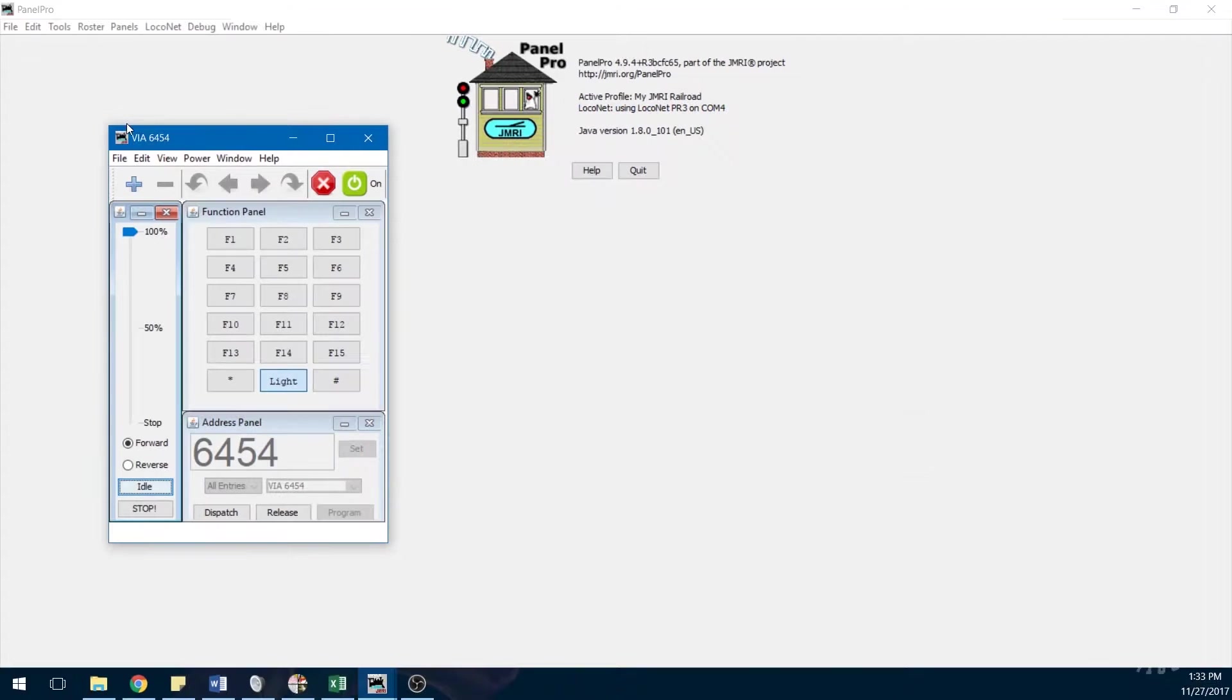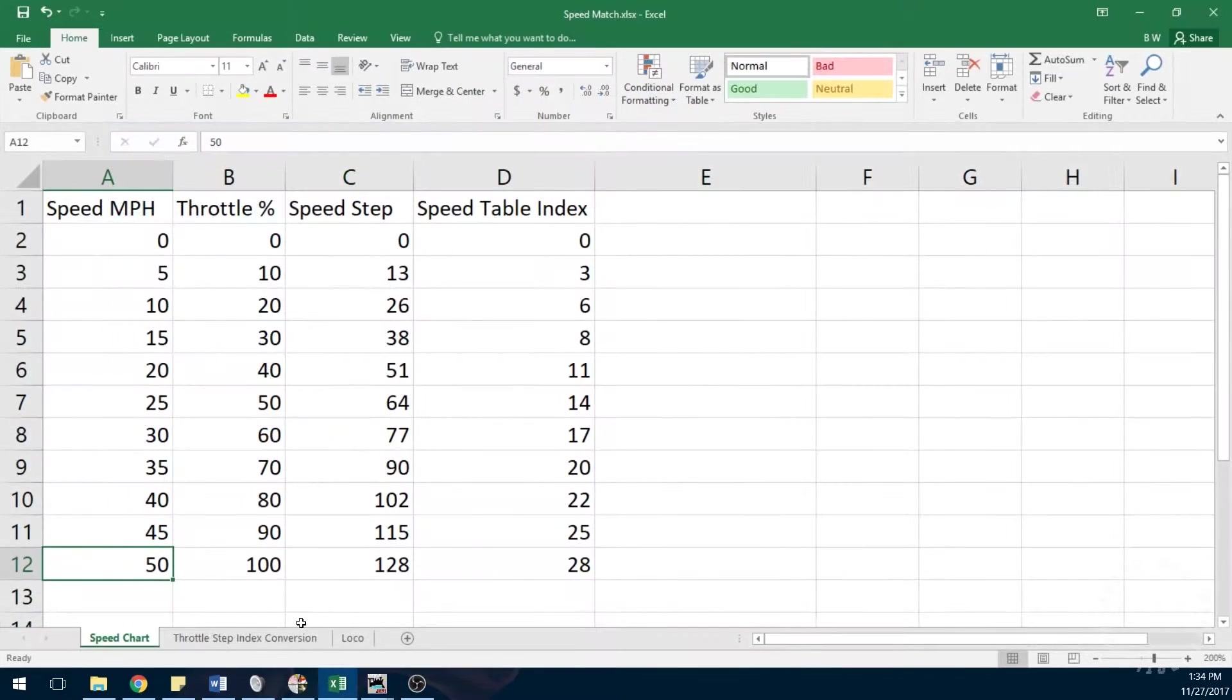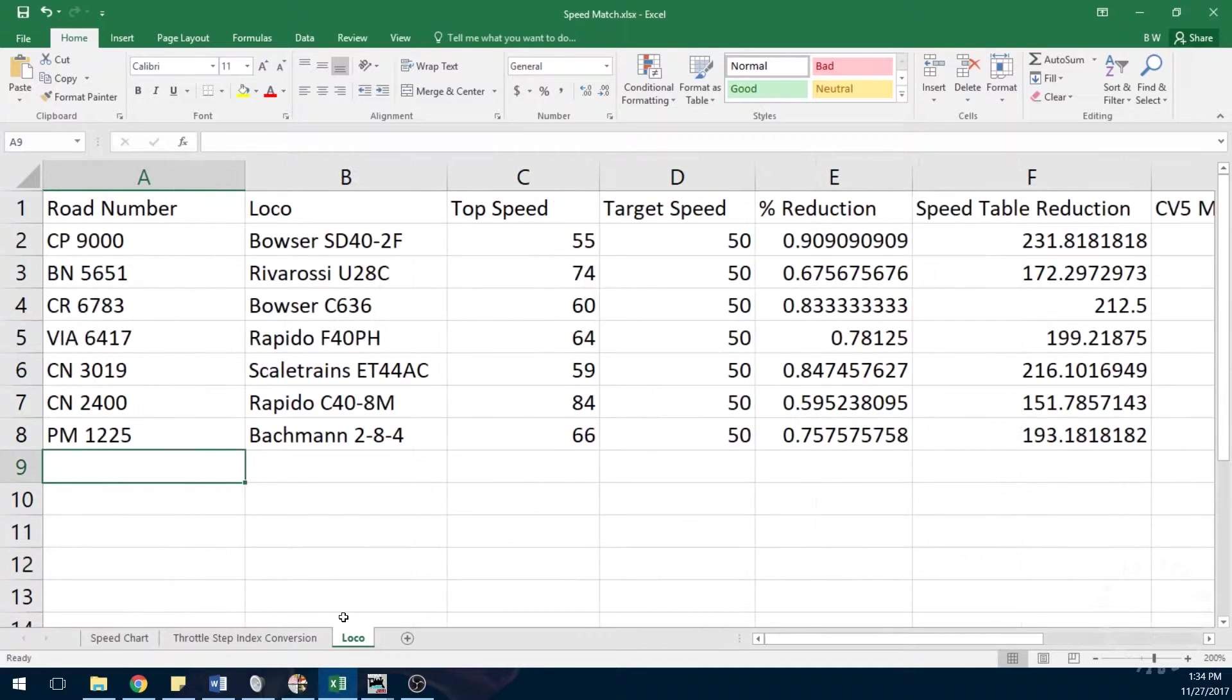I have this Rapido F40 here that I am just going to run with its default settings. I am going to set the throttle to 100% and see how fast the locomotive runs. It runs at 64 scale miles per hour. I am going to enter this number into the spreadsheet I made, which will tell me approximately how much to reduce the CV5 max voltage by in order to reach a top speed of 50 scale miles per hour. I will make this chart available for download as well.